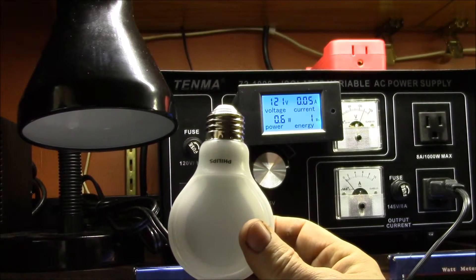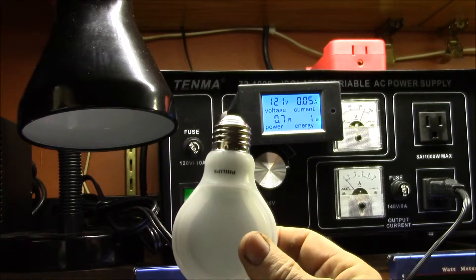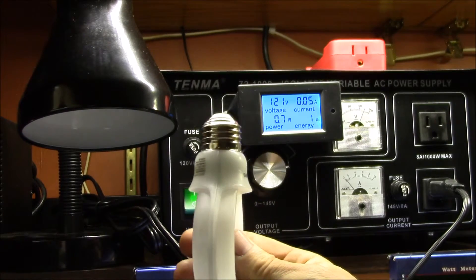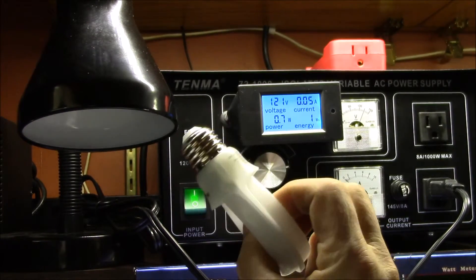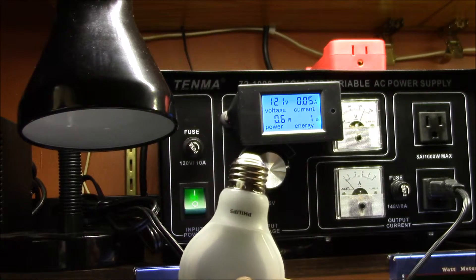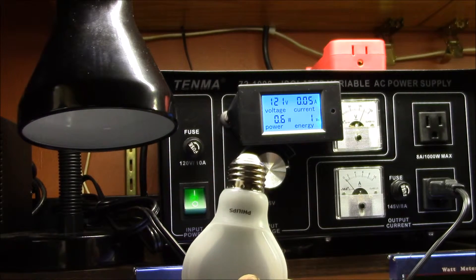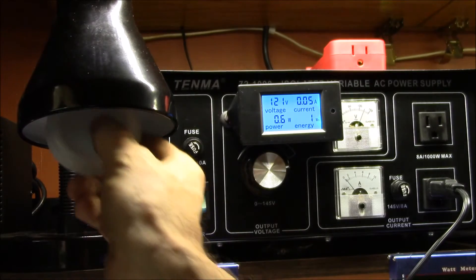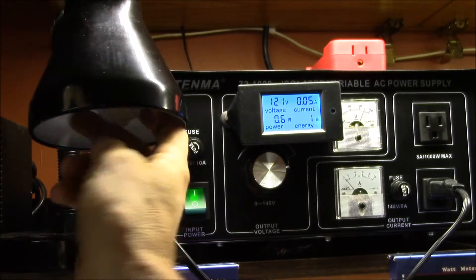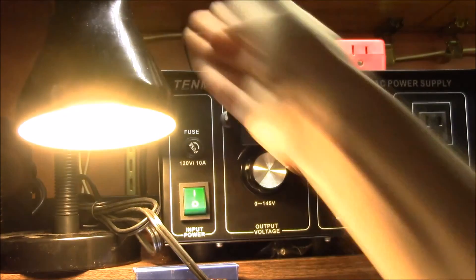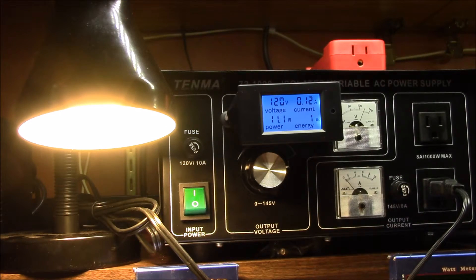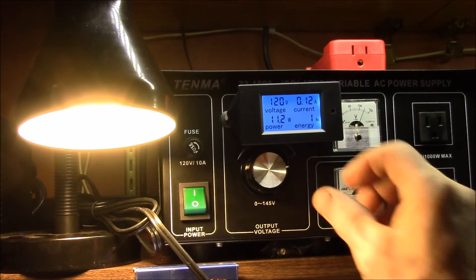Okay, this last bulb is a dimmable 10.5 watt Phillips slim style, high CRI or color rendering index bulb. So off screen, I measured a power factor of 0.9. And I'll get this screwed into the lamp here. And we can switch it on. And so at 120 volts, you can see about 10.5 watts of power and around 90 milliamps of current. Actually, it's showing about 70 here. I think as it warms up, the current will kind of change.